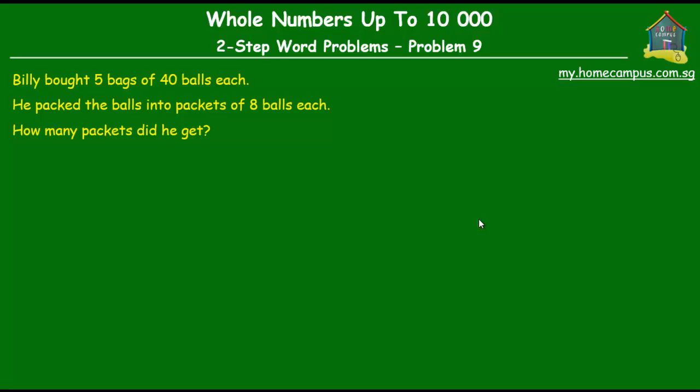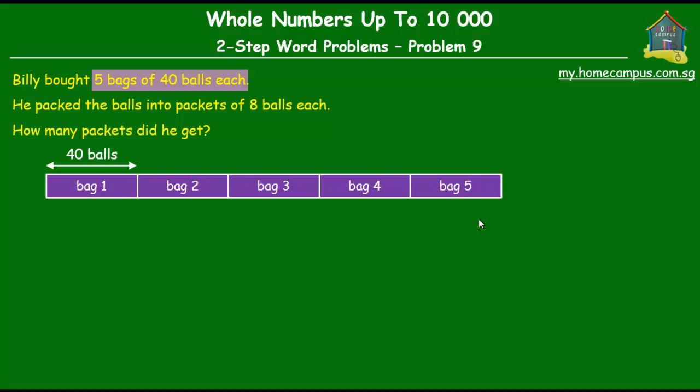Let's try to understand this problem using a model diagram. So Billy bought five bags of 40 balls each. Here is one bag of 40 balls and Billy bought five such bags. So he bought one, two, three, four and five such bags of 40 balls each.